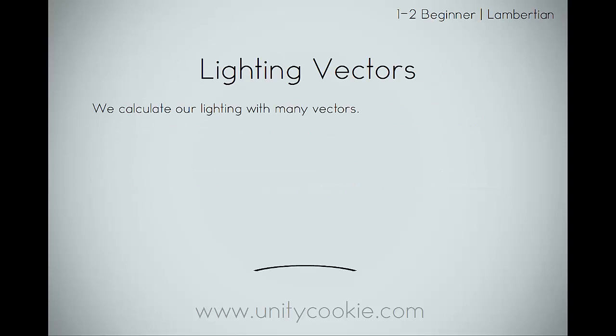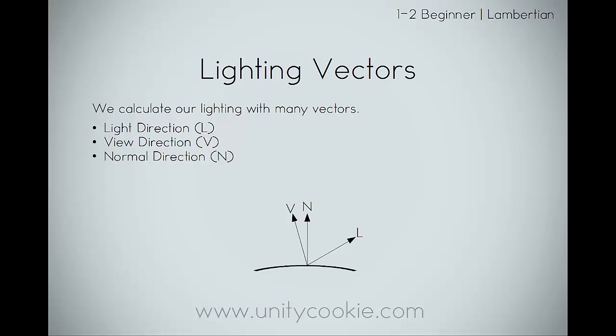We calculate our lighting with many vectors. We have the light direction — the direction that the light is coming from — the view direction, which is the direction to the viewer's eye, the normal direction, the direction straight away from the surface, the reflected direction, which is at 90 degrees from the light based on the normal direction, and the halfway vector, which is halfway between the view and the light. We can use a dot product to calculate the distance between these vectors to create variances in lighting.